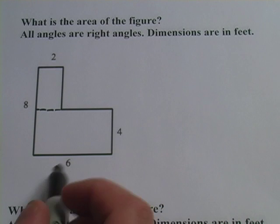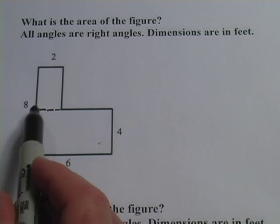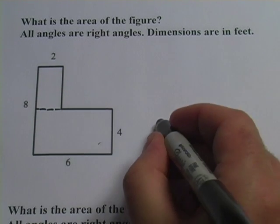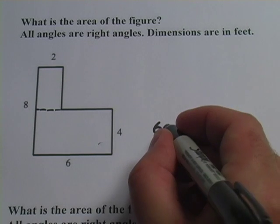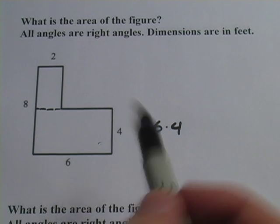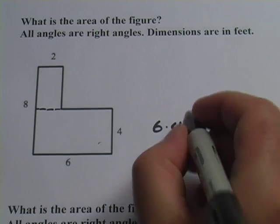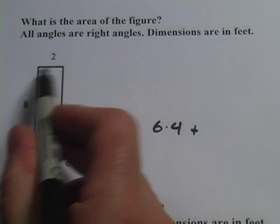This one down here is pretty easy. It's six by four, this rectangle here. So that's going to be six times four because area of a rectangle is length times width. So six times four. And to get the area of the whole thing, I'm going to add whatever area this is.